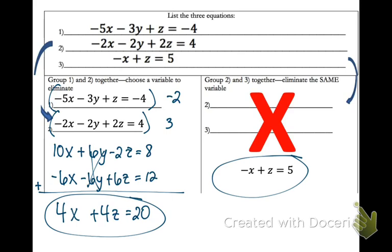Again, since we were already missing our y variable for one of our equations, it kind of made it easier, because we don't have to work to get an equation that has an x and a z in it. We've already got one. So moving on to our next box.